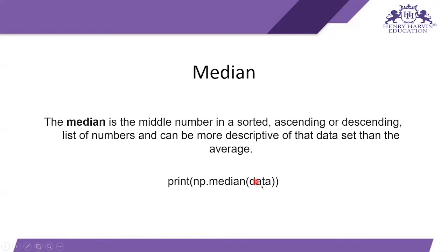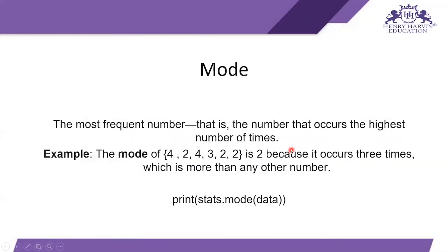Mode is the most frequent number — the number that occurs the highest number of times. For example, the mode of [4, 2, 4, 3, 2, 2] is 2 because it occurs three times, more than any other number. In code, we calculate the mode by writing: print(stats.mode(data)).